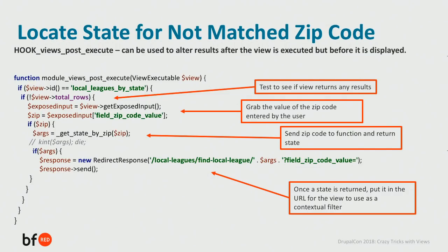For outcome three, we use hook_views_post_execute, which is used to alter results after the view is executed but before it is displayed. We want the view to execute because we need to test if it returned any results. If it didn't, that means there wasn't a matching local league. Once we know there are no results, we grab the zip code entered by the user, pass it to the getStateByZip function to return the state term ID, and put that in the URL for the view to use as a contextual filter — essentially giving the user the outcome-one state-level page.